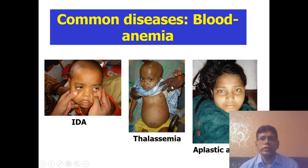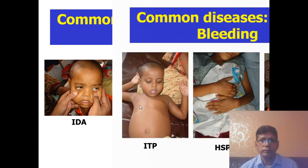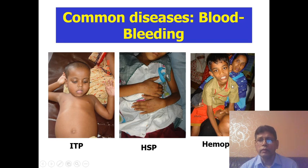Most common blood diseases: anemia — iron deficiency anemia, in a child coming with a poor history of feeding; then thalassemia, with severe anemia, hepatosplenomegaly, requiring blood transfusion; and aplastic anemia. You must know iron deficiency anemia and thalassemia. For bleeding disorders: immune thrombocytopenic purpura — bleeding spots in the skin or bleeding from different parts of the body. Henoch-Schönlein purpura. And hemophilia — with hemarthrosis, such as a hugely distended left knee joint.